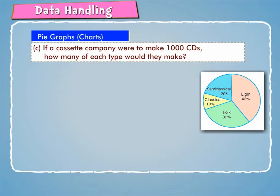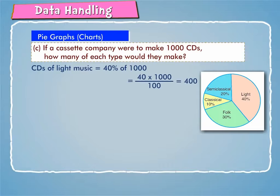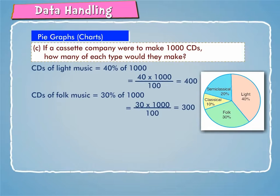If a cassette company were to make 1000 CDs, how many of each type would they make? CDs of light music = 40% of 1000 = 40 × 1000 / 100 = 400. CDs of folk music = 30% of 1000 = 30 × 1000 / 100 = 300.